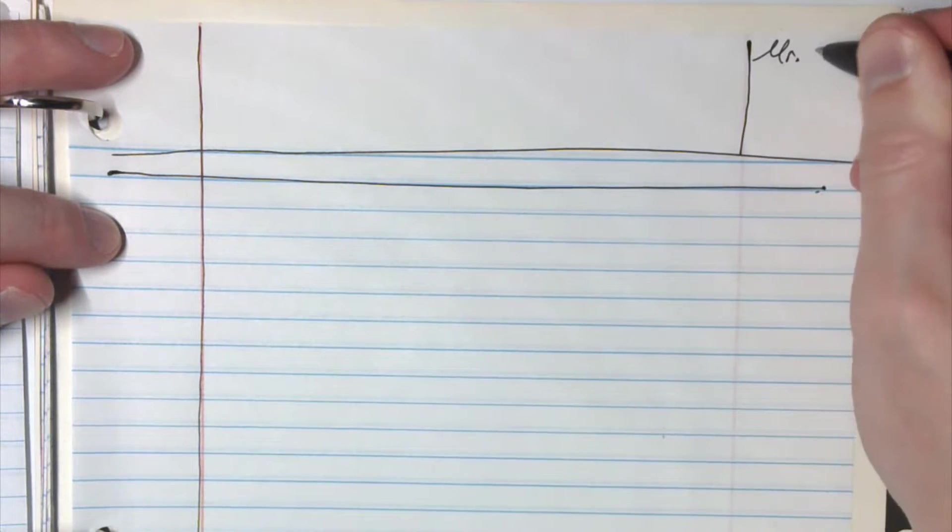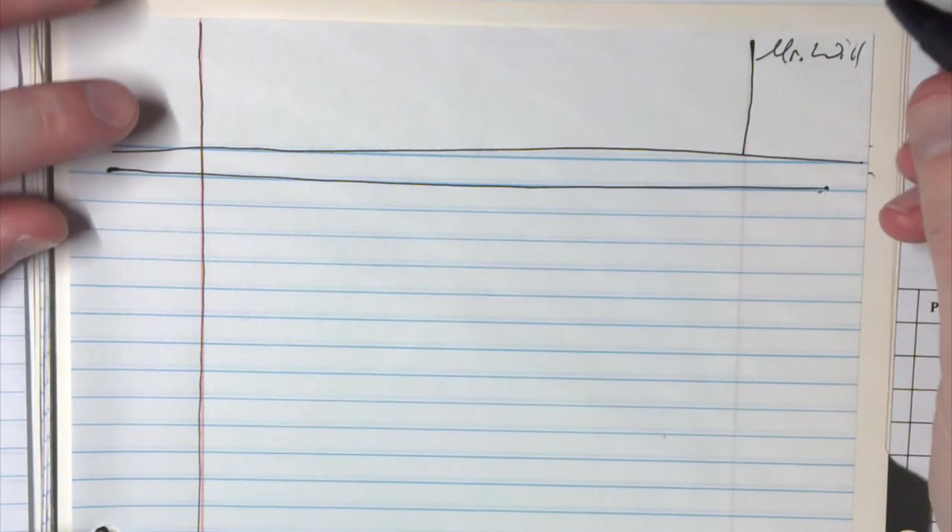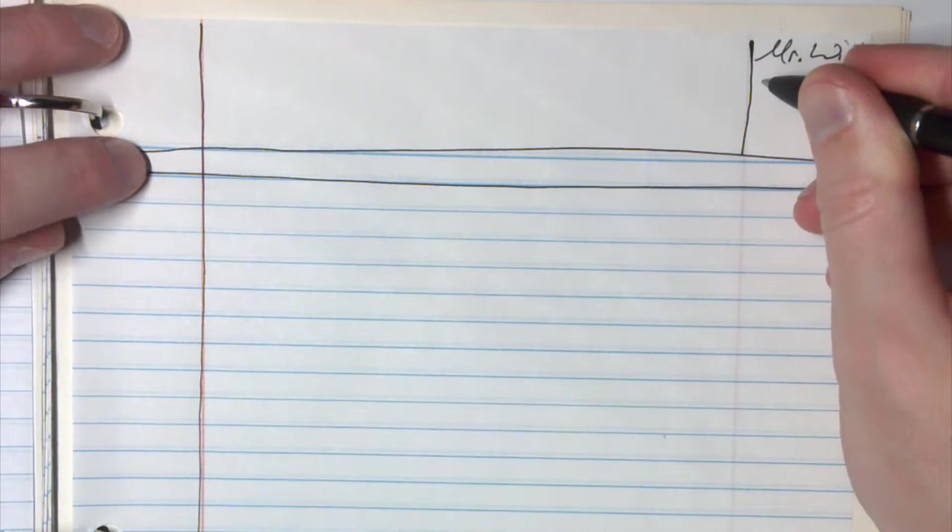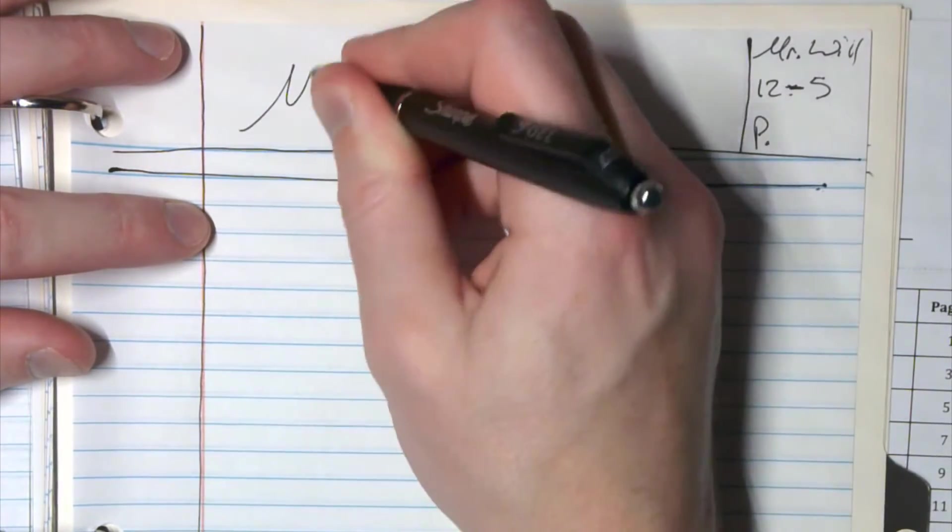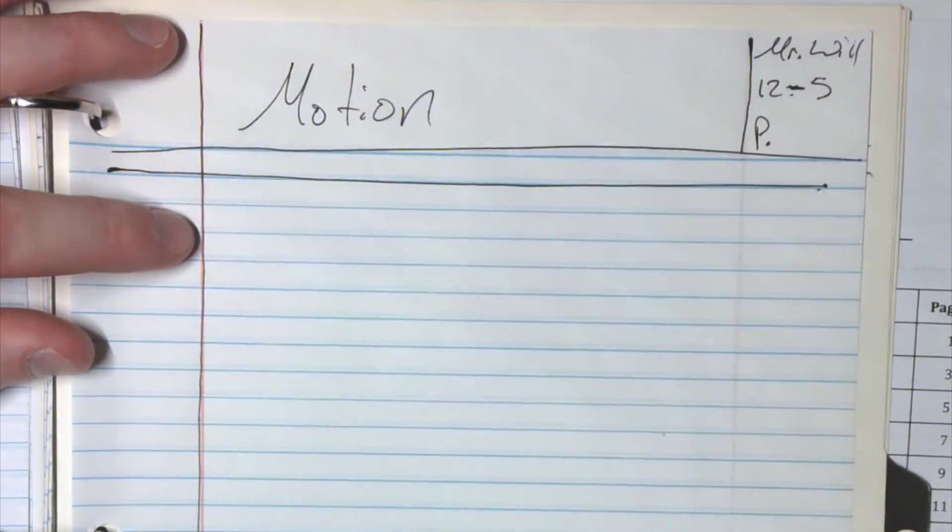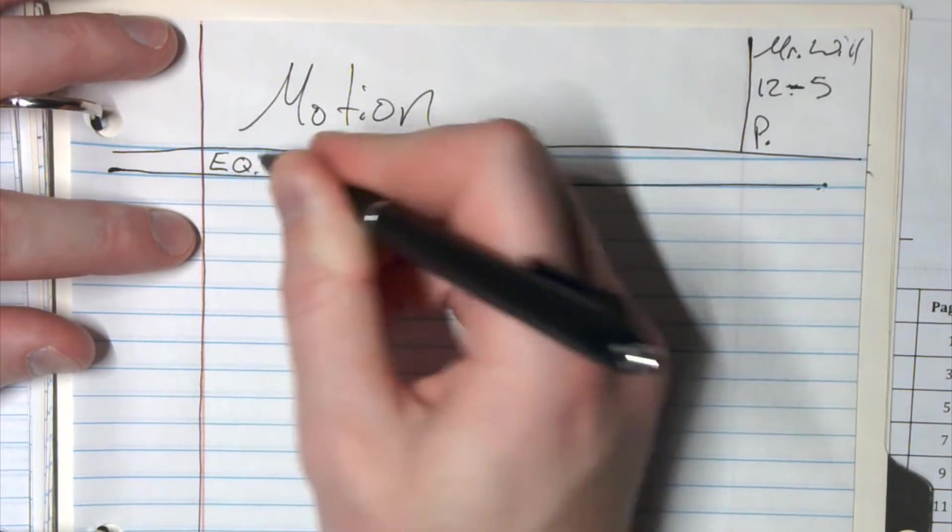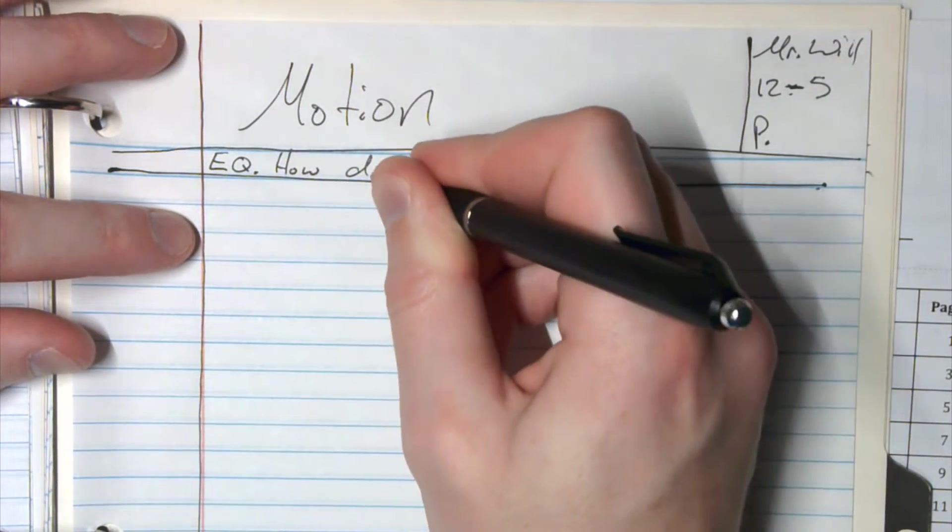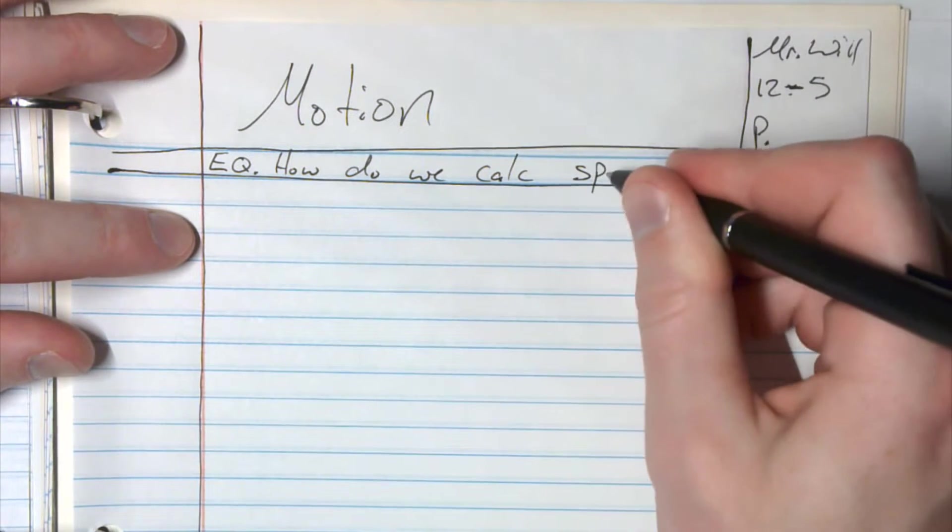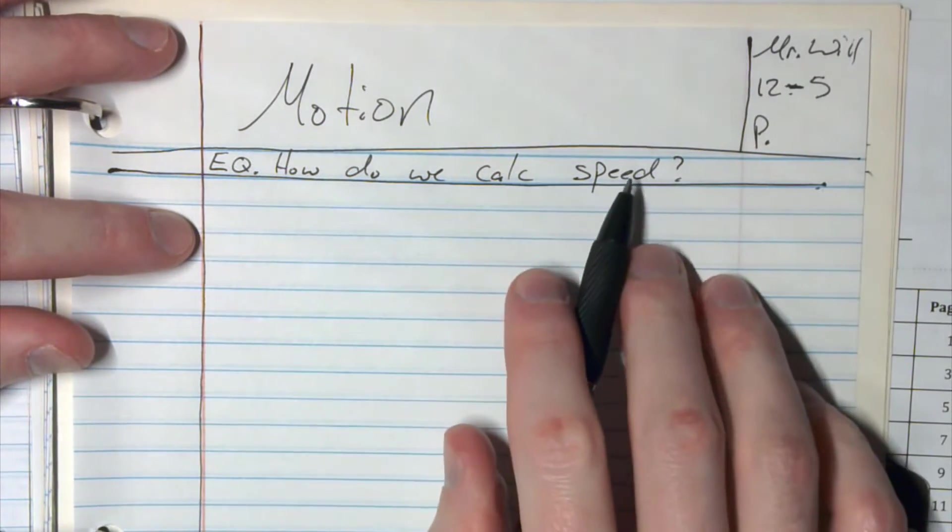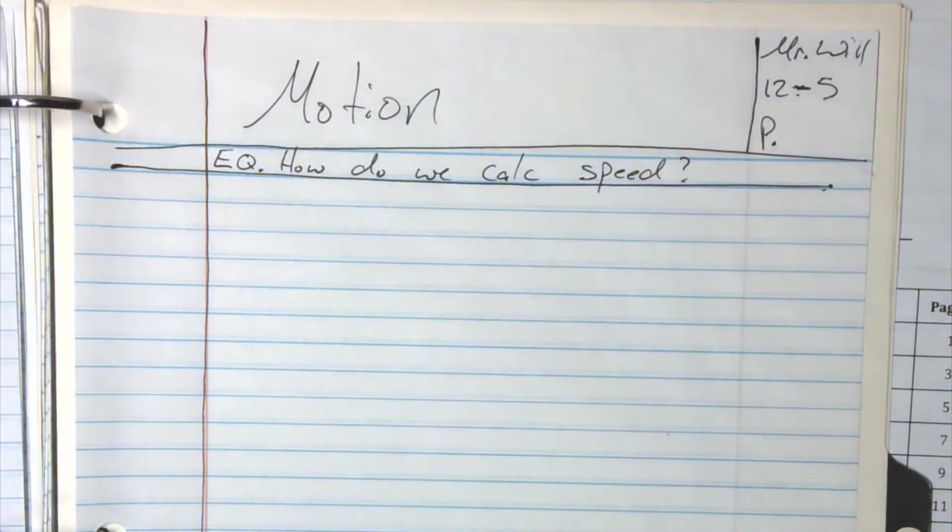I'll put my name up here as well as the date, 12/5, and then whatever class period you have. All right, so this one's motion. Let's put motion at the top, and in our essential question: How do we calculate speed? That's just one of the things we could do - we can do time or distance, but let's do that one.